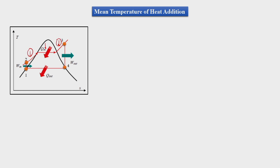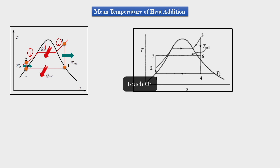The sensible heat part, which deals with the economizer and superheater, leads to a change in temperature. To find the mean temperature of heat addition, we reformulate the cycle with a new sketch where process 2 to 3 is replaced by process 5 to 6 such that the area under curve 2 to 3 equals the area under curve 5 to 6.